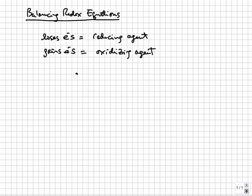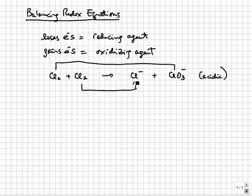We will use an example to demonstrate the half-reaction method. The reaction we want to balance is Cl2 going to Cl minus plus ClO3 minus in acidic solution. This reaction is an example of a disproportionation reaction, a redox reaction in which the same reactant is acting as both the oxidizing and the reducing agent. So we rewrite this equation with two Cl2: one Cl2 is oxidized, another is reduced.